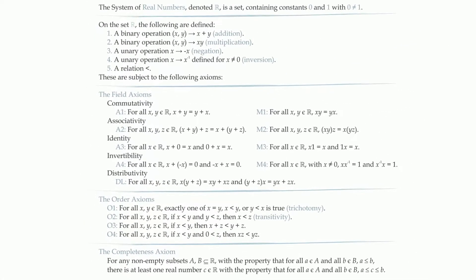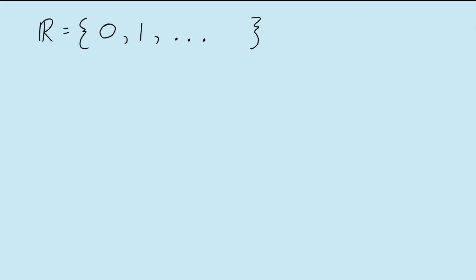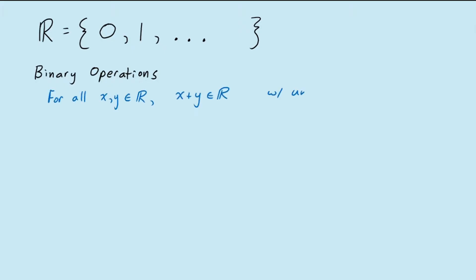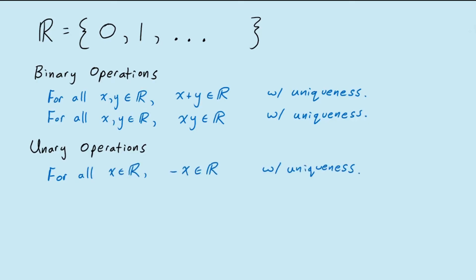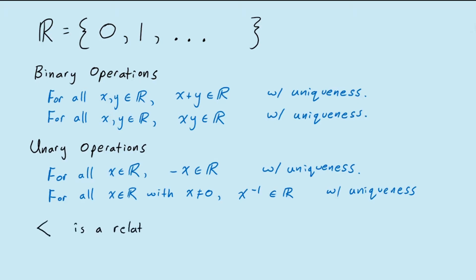To summarize, we are defining the real numbers to be a set of objects with at least two elements, those being 0 and 1. Further, we're able to add the elements of this set together, we're able to multiply them together, we can negate them, and for all the numbers except 0, we can invert them. We are also given a sort of vague abstract relation denoted with the less than symbol, and all of these are subject to a series of axioms. We'll talk more about the axioms in the videos that follow.